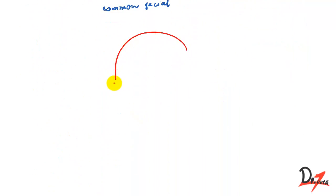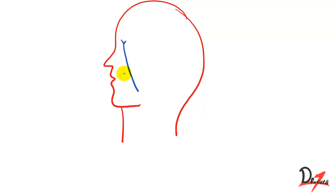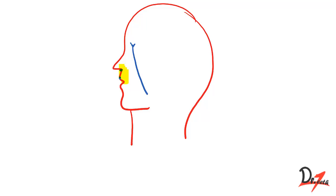This is our face, and we can see the facial vein here. The dangerous area comprises the lower part of the nose, the upper lip, and the adjoining cheek. That is the dangerous area of the face. It is called dangerous because this facial vein communicates with the cavernous sinus via two routes.